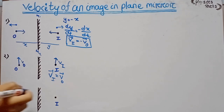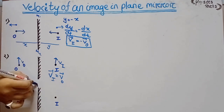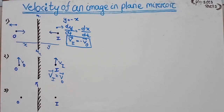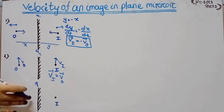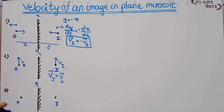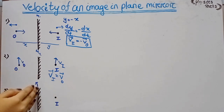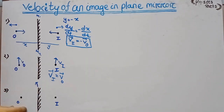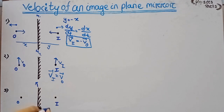If the mirror moves upward or downward — that is, parallel to the plane of the object and image — the velocity of the image equals the velocity of the object. Whether the mirror moves in this direction or that direction, there is no change in the velocity of the image with respect to the object.